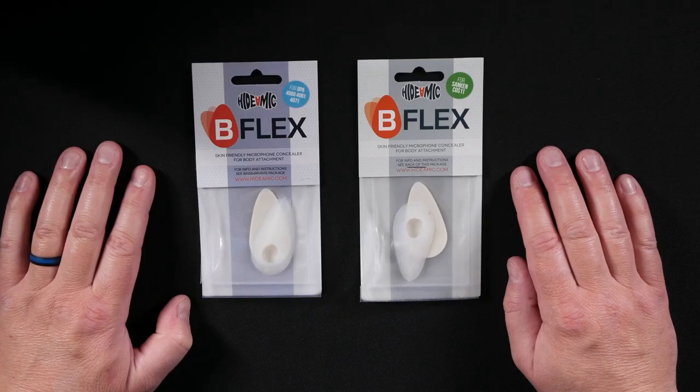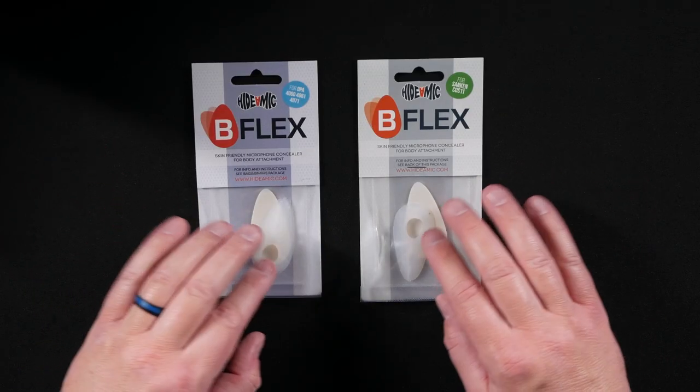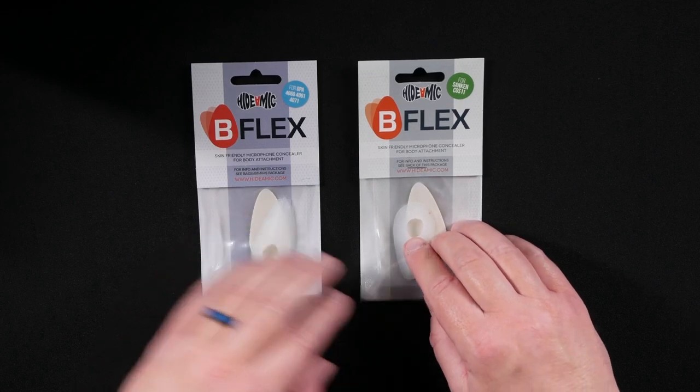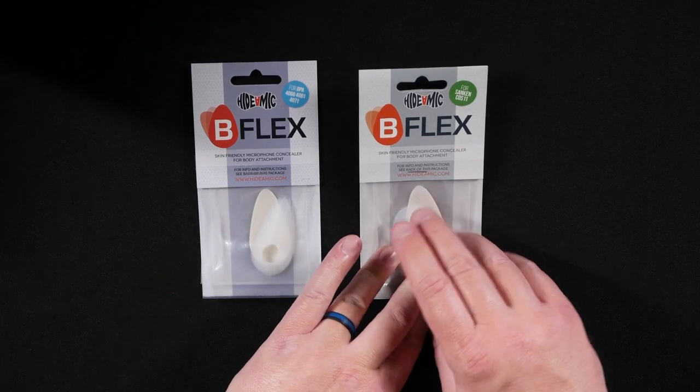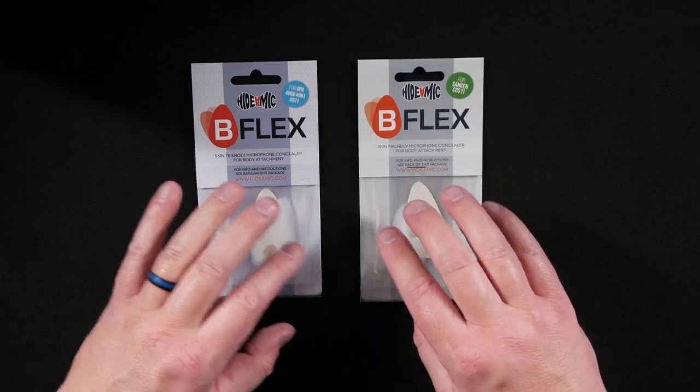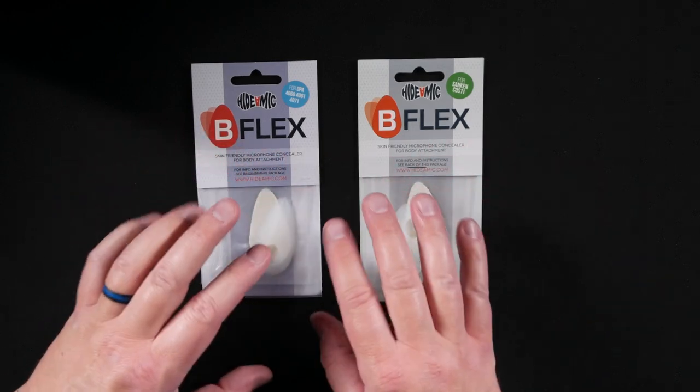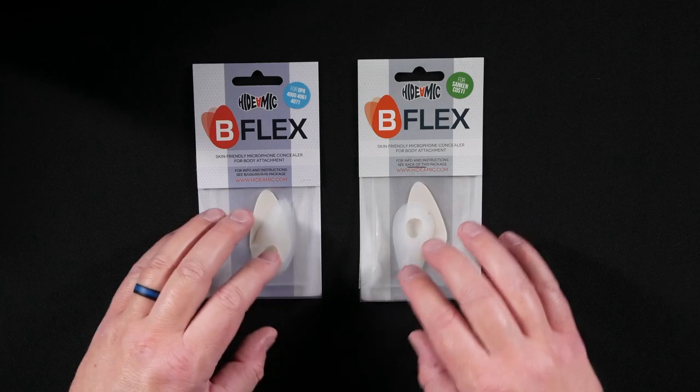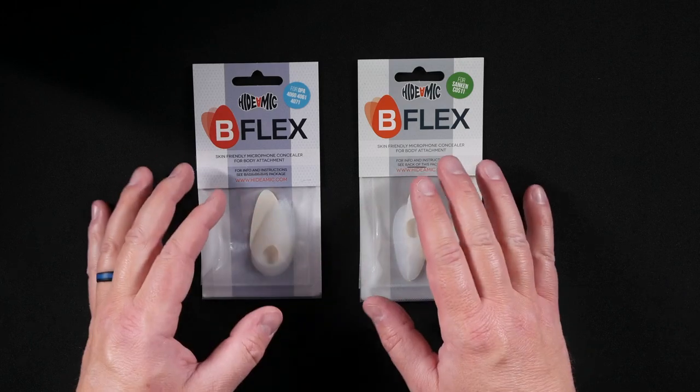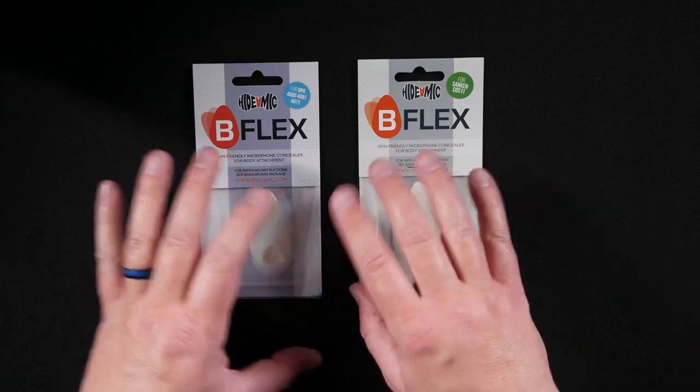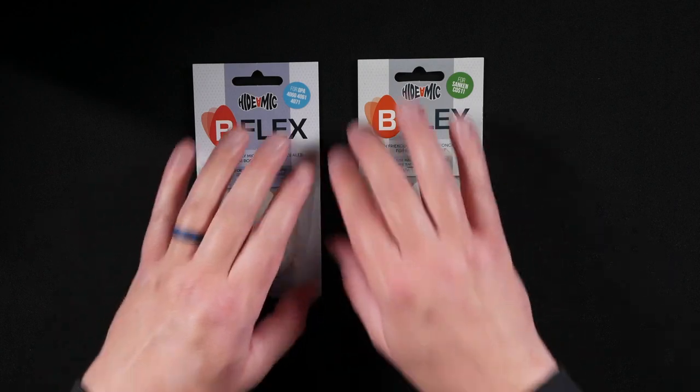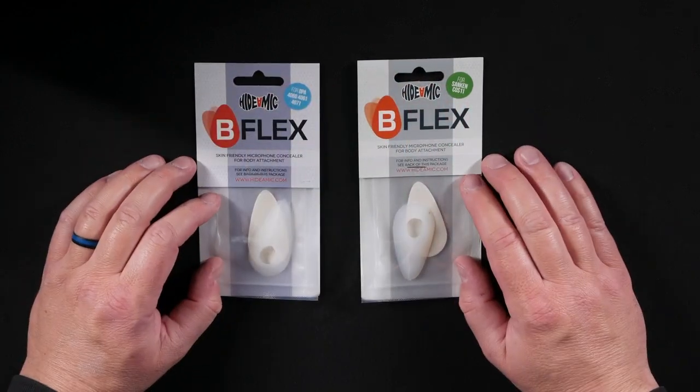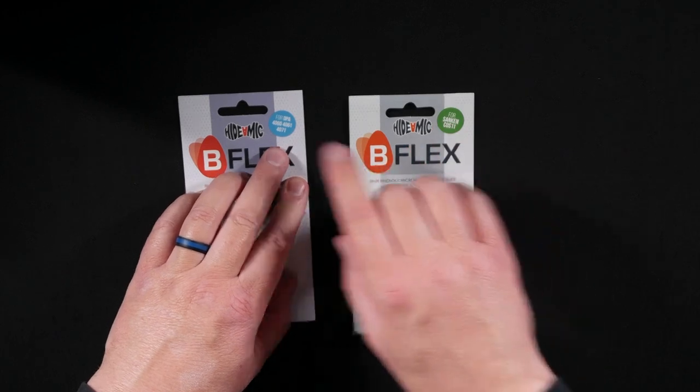The B Flex is another lavalier microphone hiding product that basically is silicone rubber and it's available in black, gray, and beige. The idea is to put a lot of space around the lav yet again. It has a larger surface, which will help it stay in place better. And the curve design is going to help it pull the eye a little bit less than it would if it was just a lavalier microphone. You have to buy it for a particular microphone.